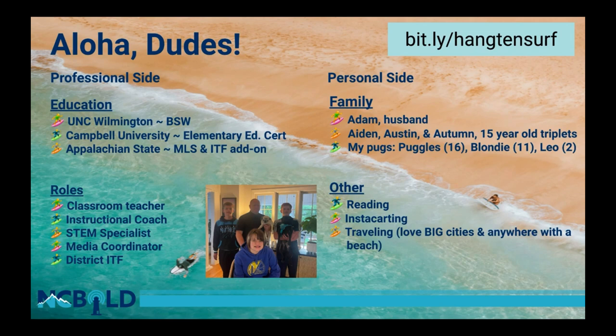On the personal side, I am married to Adam, who commutes to Raleigh because he works with the Raleigh Fire Department. My kids are 15-year-old triplets — Aiden, Austin, and Autumn. Yes, they all have the same initials. I also have three pugs: Puggles is 16, Blondie is 11, and we got a puppy, Leo, who is now two — he keeps things lively around our house. Some other things I enjoy: I love to read, I love to Instacart as a great side hustle, and I love to travel — big cities and anywhere with a beach.